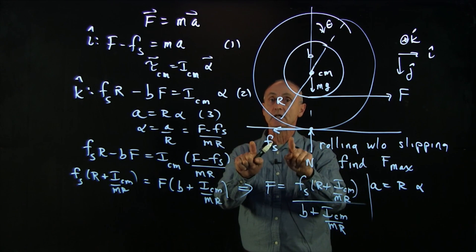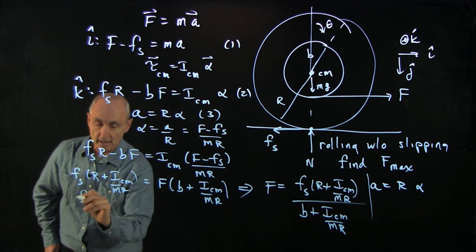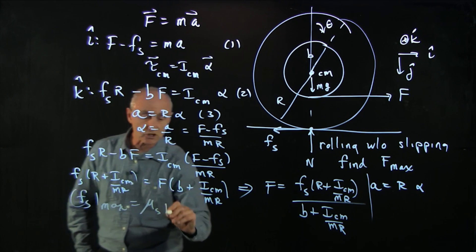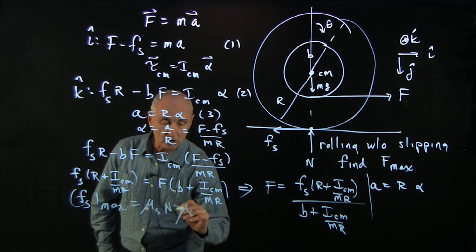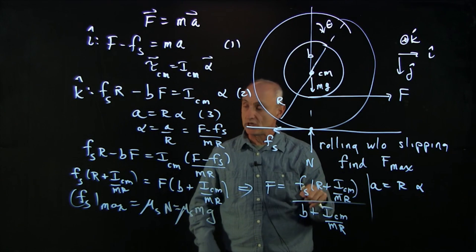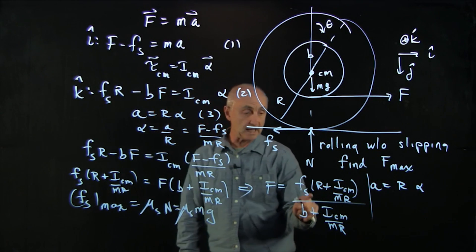But static friction can only have a maximum value. That hasn't changed. The maximum value of static friction is the coefficient of static friction times a normal force, which in this case is just normal balancing gravity, mg. So this is the maximum value that static friction can have.